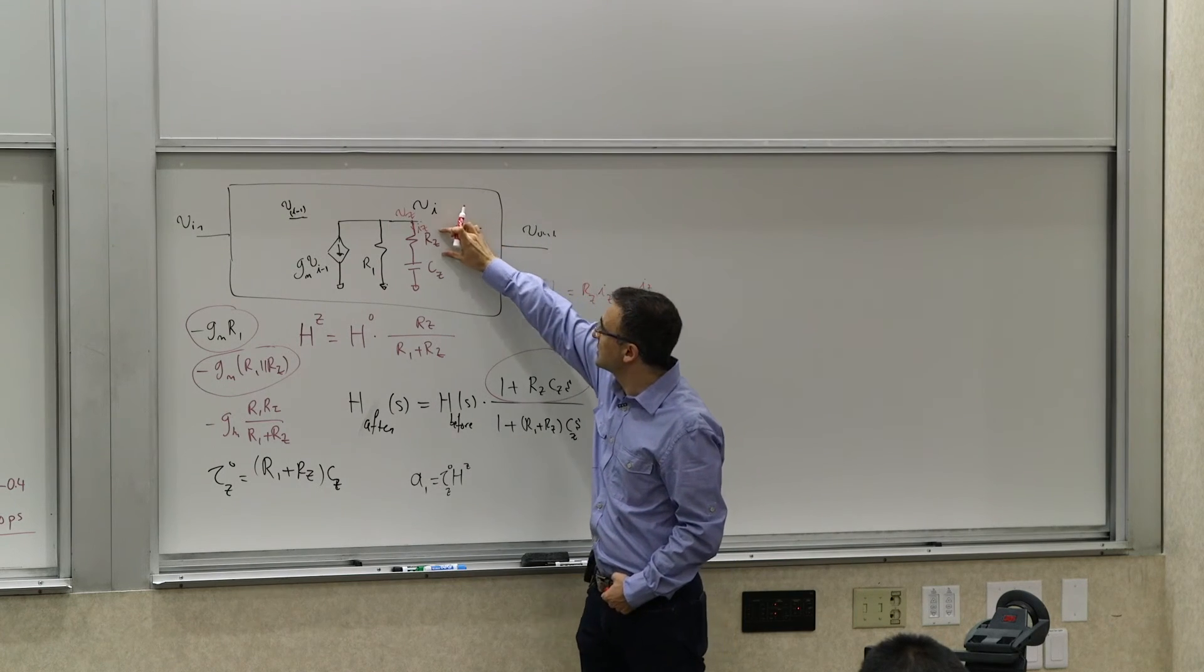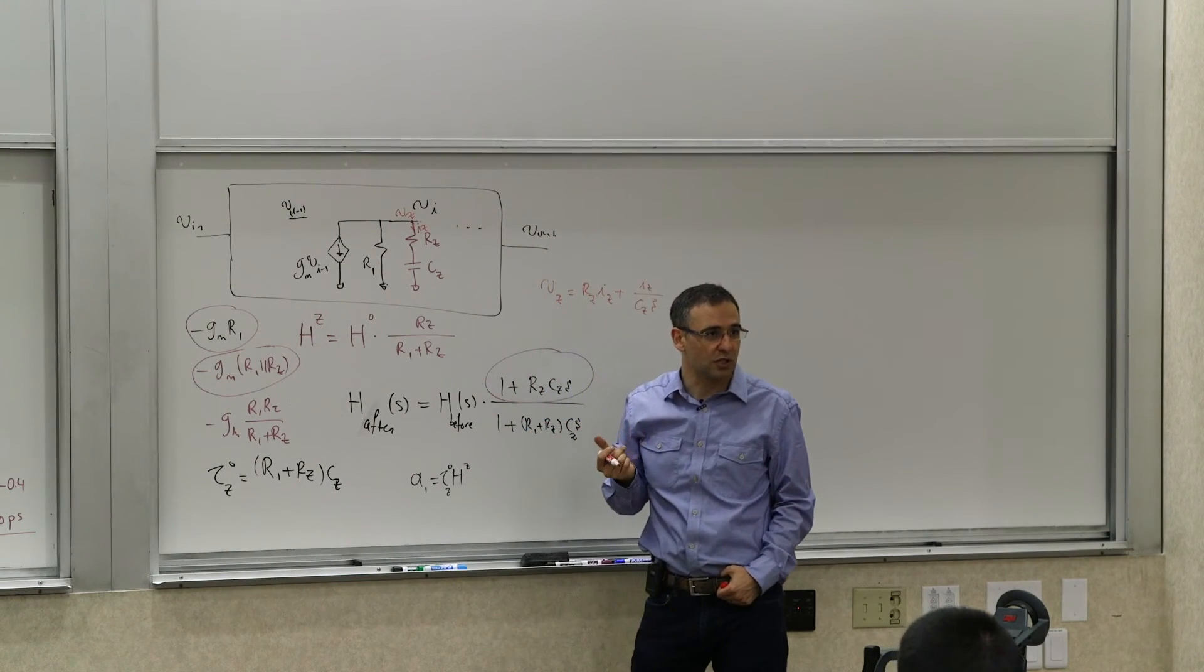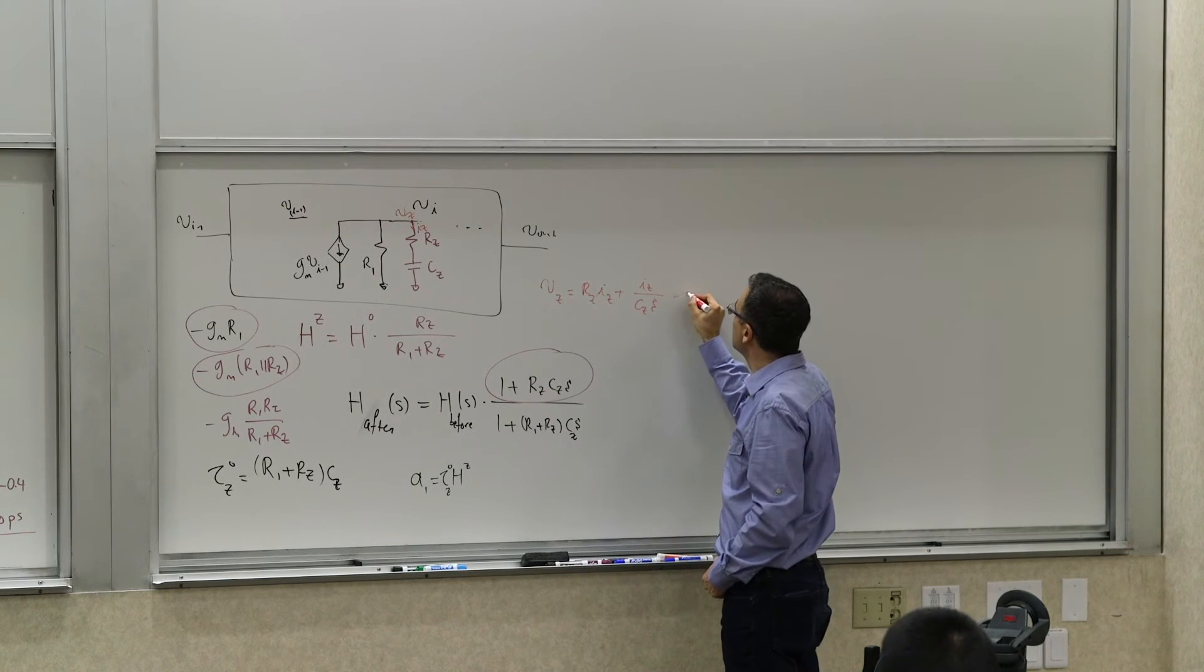That's the voltage drop. This is the impedance of the capacitor times its current, which is Iz, gives you the voltage here. And this is basically this resistance times Iz that gives you that voltage. So it's the sum of these two voltages Vz. So I want to set this to zero.